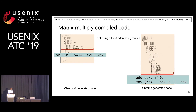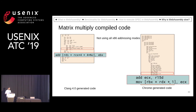Now let's look at the reasons. One reason is that Clang generates an add instruction which is able to take an x86 memory address as one of its operands. On the other hand, Chrome allocates an explicit register for it.